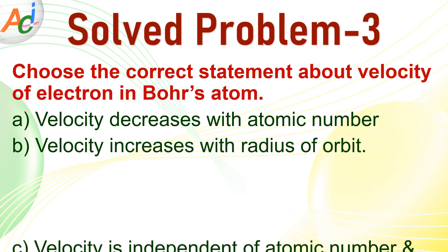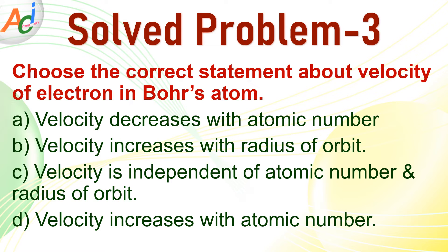Now test your understanding by choosing the correct statement about velocity of electron in Bohr's atom. First statement is velocity decreases with atomic number. In the second statement the velocity increases with radius of orbit. The third one velocity is independent of atomic number and radius of orbit. The fourth statement d velocity increases with atomic number. So you have to choose the correct statement. So you know the velocity increases with atomic number is the correct one so d is the correct option.